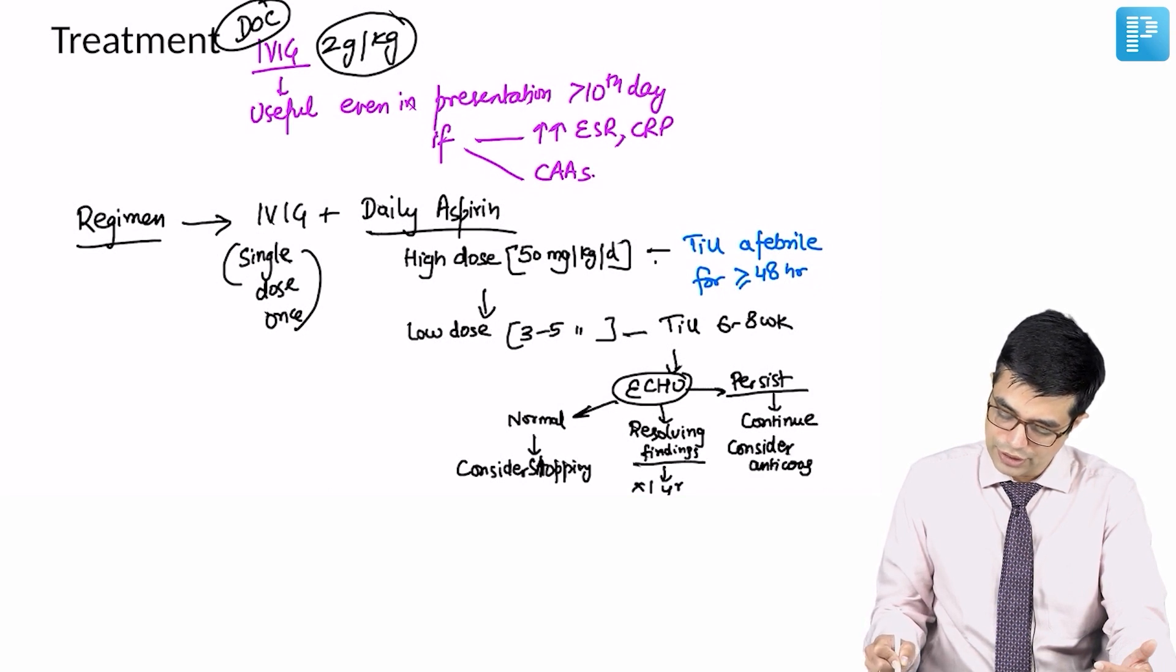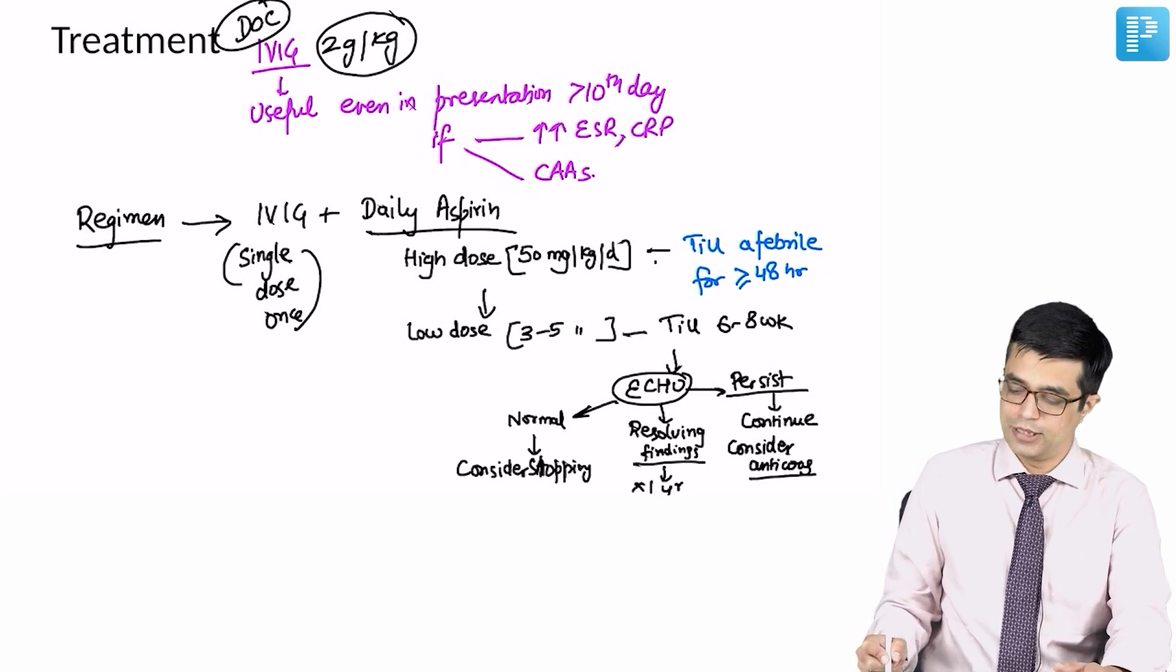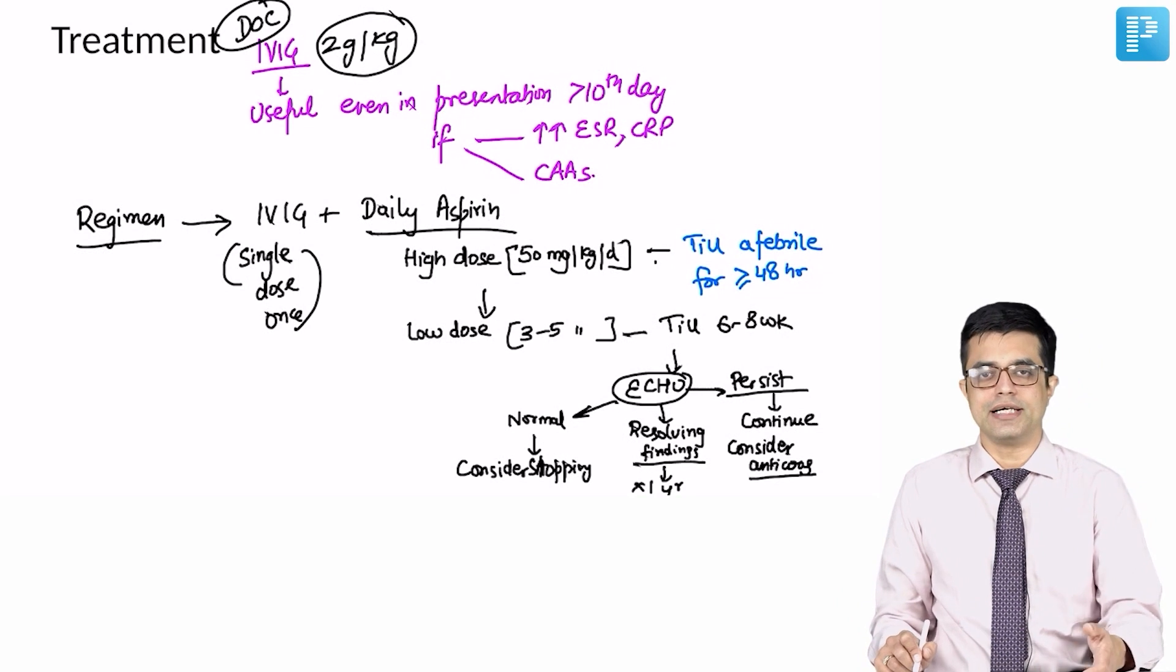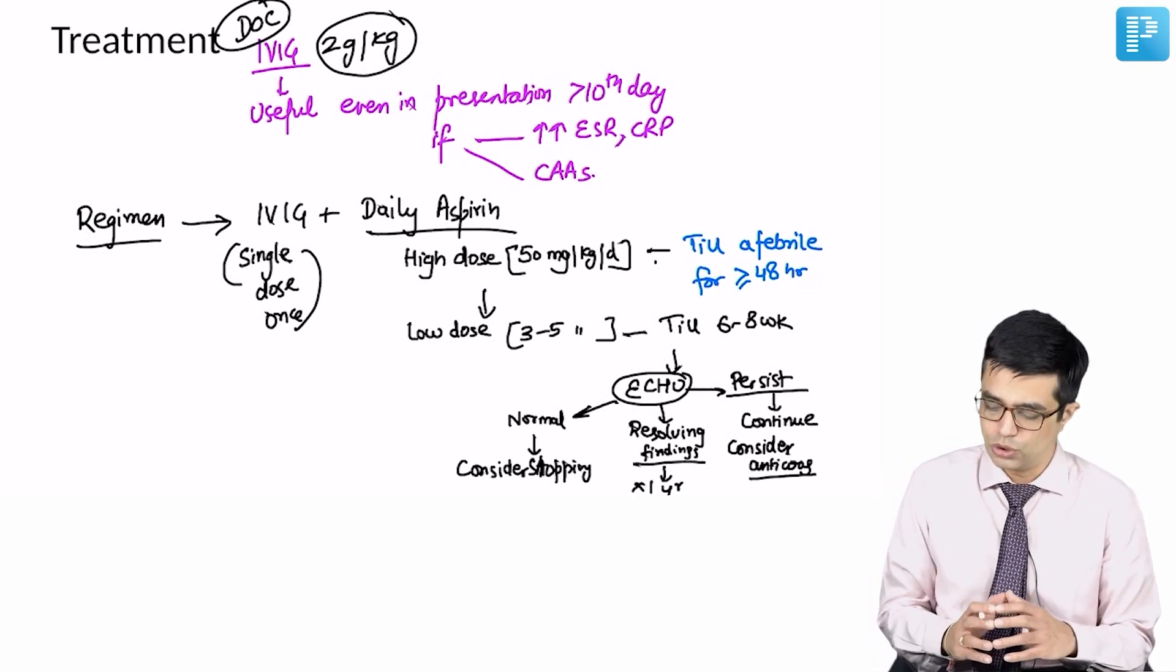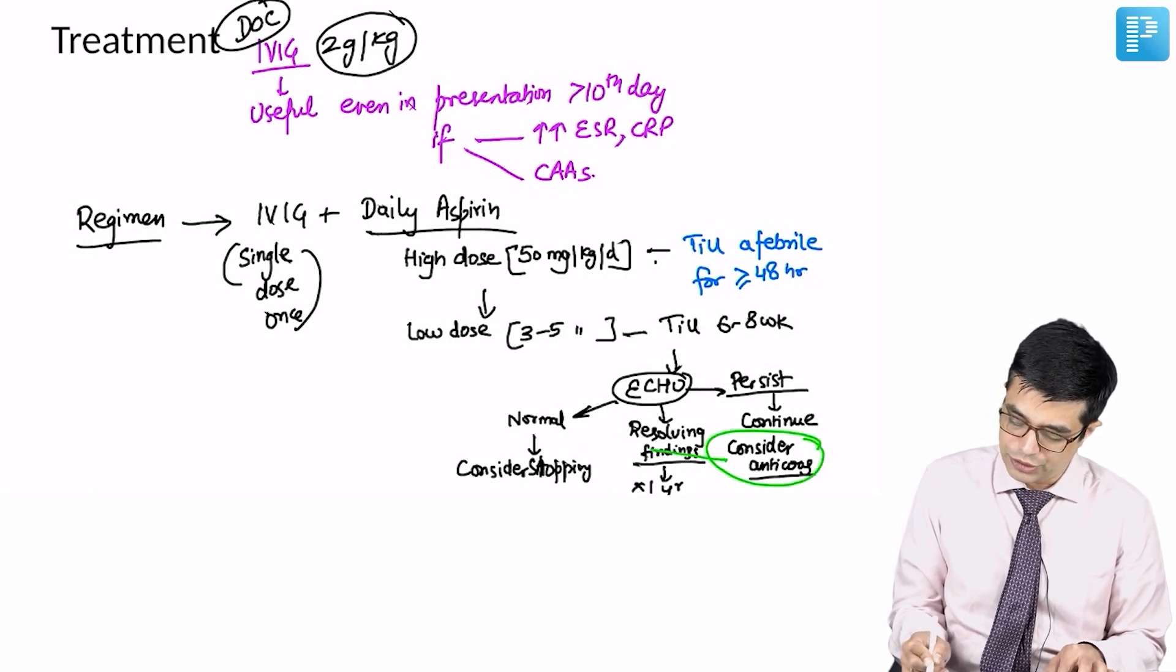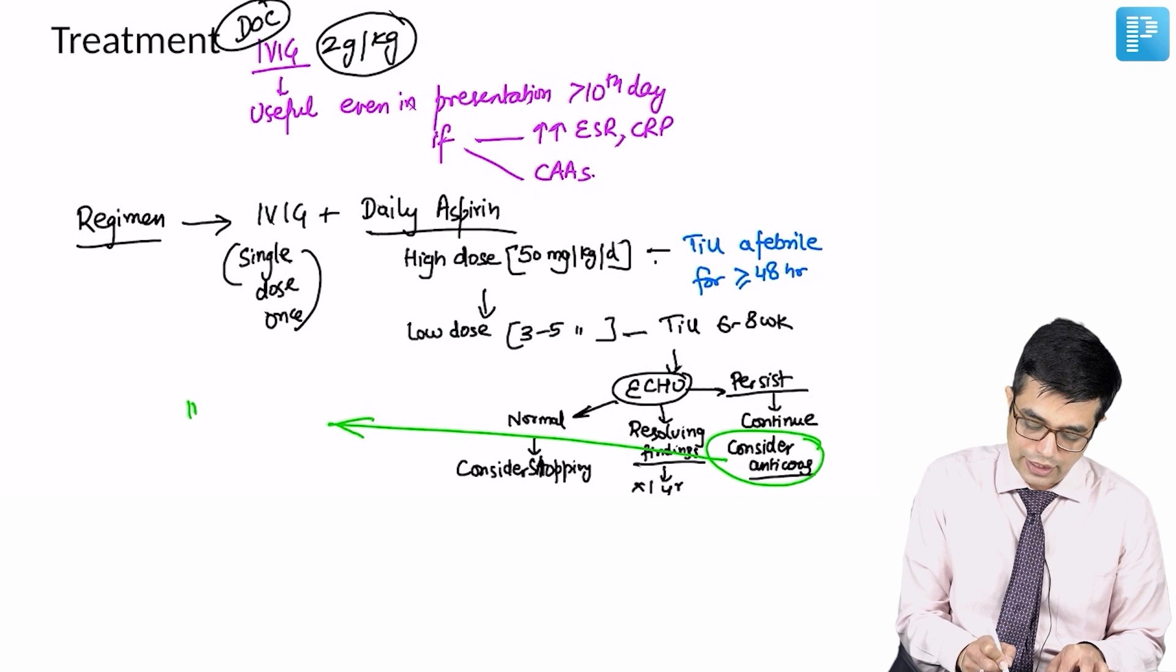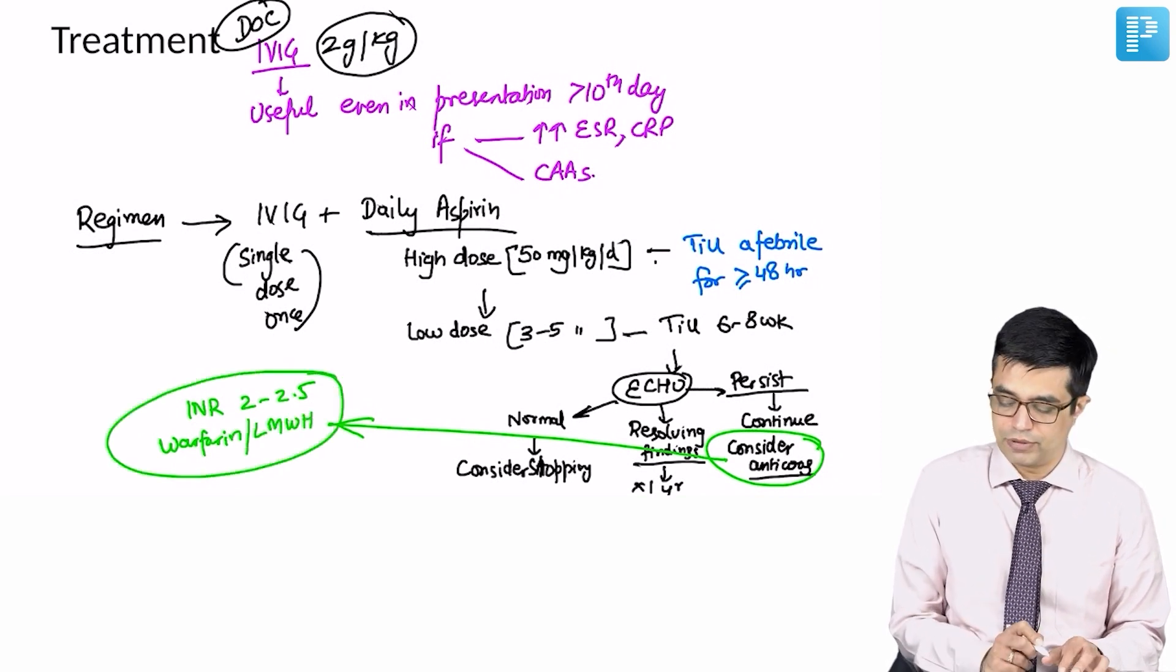For anticoagulation, you can use warfarin or low molecular weight heparin. But again, it is a controversial thing and the pediatric cardiologist should be deciding. If somebody asks you which anticoagulant is to be used, the INR should be kept between 2 to 2.5. You can use either warfarin or low molecular weight heparin for these children.